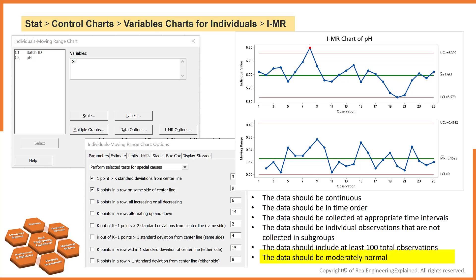The data should be moderately normal. If the data are very skewed, you could try a transformation to see if that corrects the non-normal condition. If your process naturally produces non-normal data and a transformation is effective, you can use the chart of transformed data to assess the stability of your process.